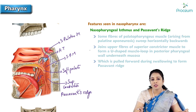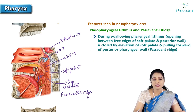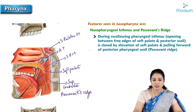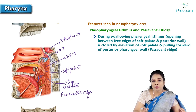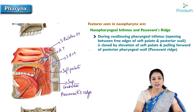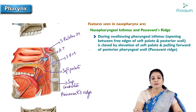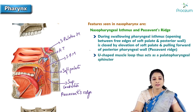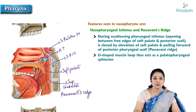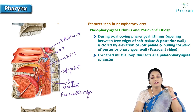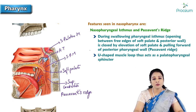During swallowing — that is, during deglutition — the pharyngeal isthmus, which is the opening between the free edges of the soft palate and the posterior wall of the nasopharynx, is closed by the elevation of the soft palate and the pulling forward of the posterior pharyngeal wall (Passavant's ridge). This U-shaped muscle loop acts as a palatopharyngeal sphincter. Because of this, during the second phase of deglutition, the nasal cavity is completely separated from the oropharynx.